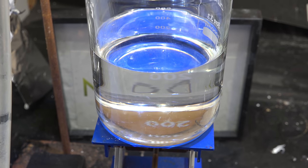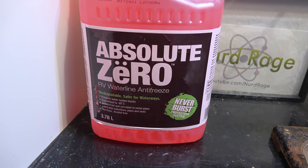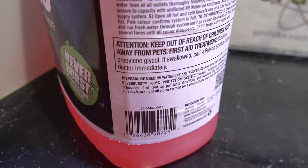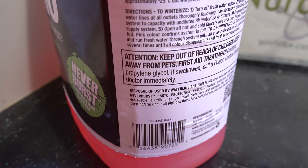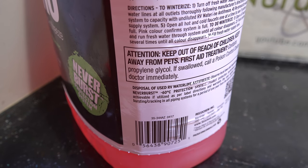Anyway, first we need our source of propylene glycol. I'm going to use this waterline antifreeze meant for RVs. Make sure it says somewhere on the label that it's made with propylene glycol. You can also use pure propylene glycol from electronic cigarette liquid if that's available to you.